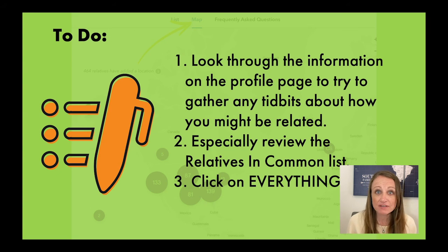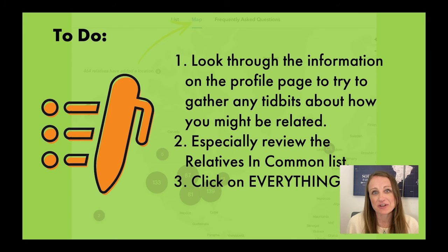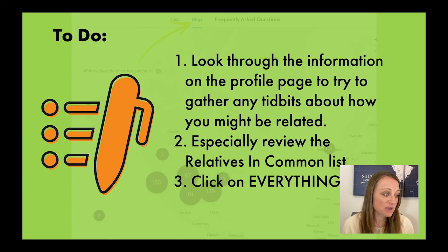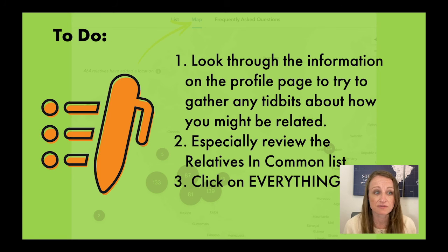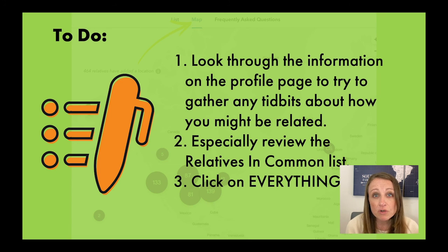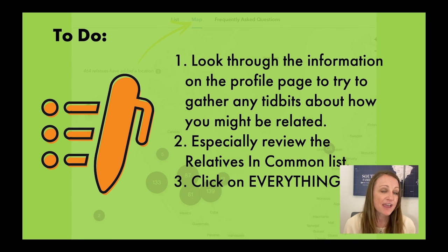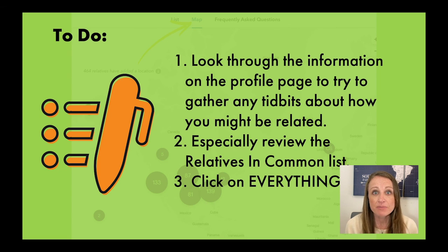You've just learned hopefully a little bit about what you might want to do with your DNA matches. If you close this video and don't go and do those things right now, you're going to forget. So this is your homework — go into your match list and look through the information on that profile page for a couple of your matches. Get a feel for what kinds of information is in there, how it's different between different individuals. Gather any tidbits that might help you figure out how you're related, and especially review that Relatives in Common list. That list is going to create a group of people who share a relationship in a similar way. Click on everything — there's so much to explore at 23andMe, but it just takes a little investigation.